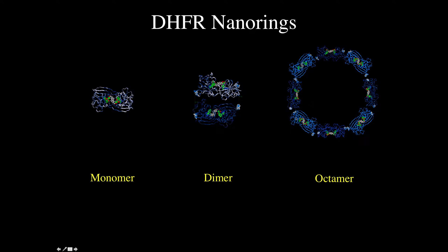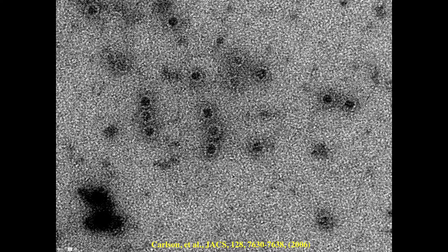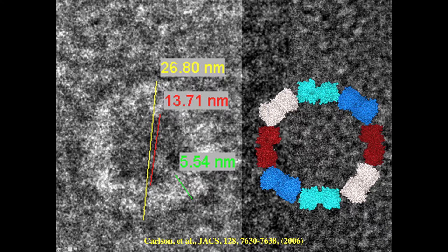Based on analysis we thought these were probably rings, so we took pictures using transmission electron microscopy. You can see the octameric rings — they're fairly homogeneous, with no linear species, true nanoparticles. We can zoom in on one and, using our crystal structure, build a model that exactly represents the structure at the molecular level. These are on the order of 25 to 30 nanometers in size.